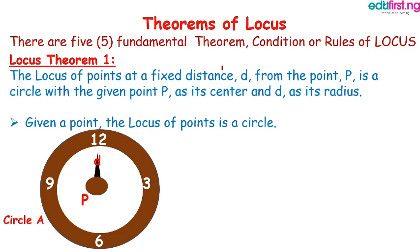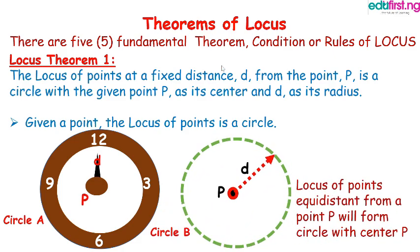For example, we have a stopwatch at home. You notice that the hand is always moving - it keeps moving, it doesn't stop, it keeps moving. Now, a sketch of our stopwatch gives us a circle. You notice that the fixed point is P, and the distance between P and the edge of the pointer is d. So the locus of points equidistant from point P will form a circle with center P.